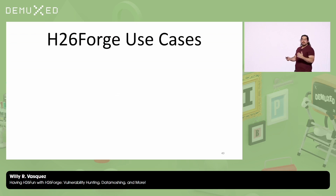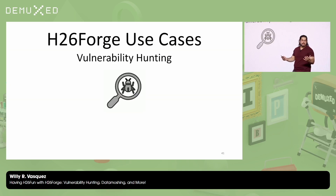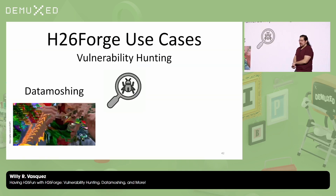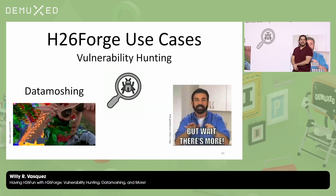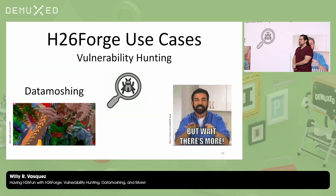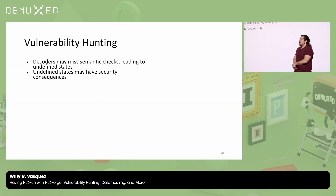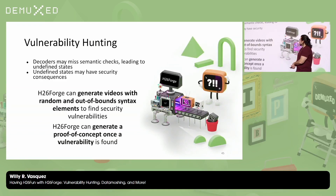There are two main use cases for H26Forge. First is vulnerability hunting — my background is in security. The key issue is that decoders may miss semantic checks, leading to undefined states, and these undefined states may have security consequences. With H26Forge, we can generate videos with random and out-of-bounds syntax elements, and once we find a vulnerability, we can use it to create a proof of concept.